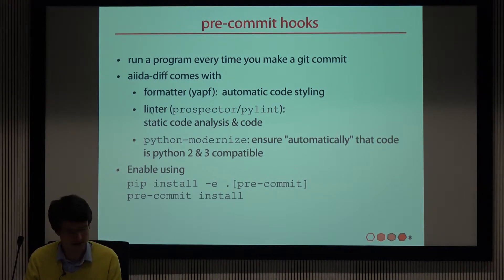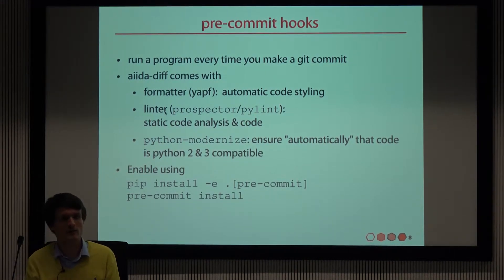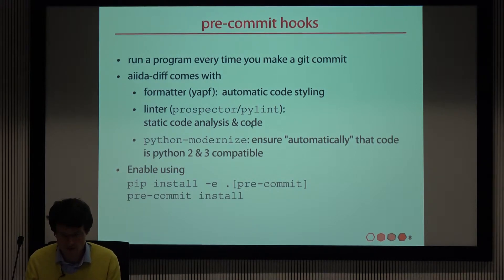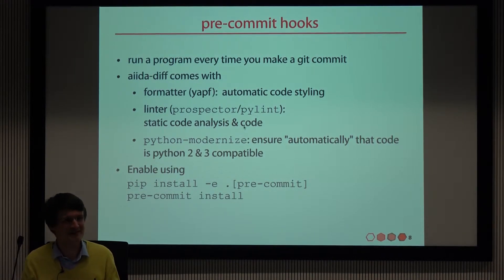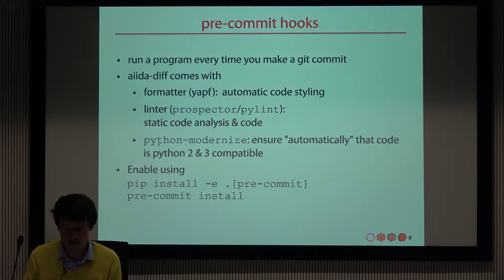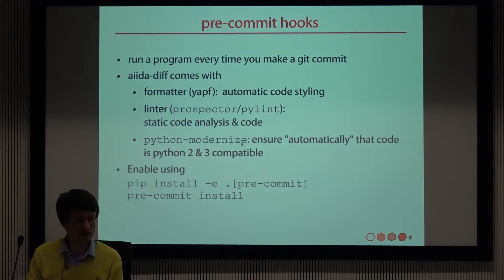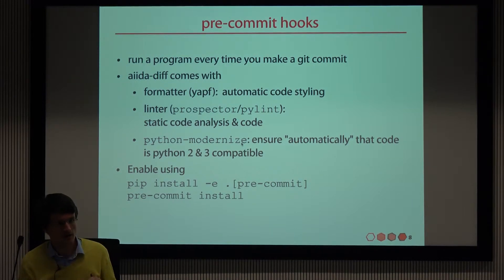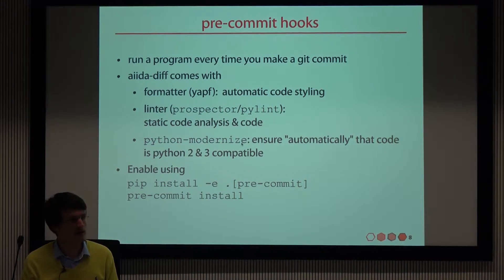Then there is a linter. This is very helpful — it can, when you try committing code, detect errors using static code analysis without ever having to run it. It also gives you suggestions on things you should be doing, even if it's not sure whether it's really an error. Finally, there's Python modernize, a very useful package that helps you write Python 2 and Python 3 compatible code. We use this in AIDA core, and it's part of the pre-commit hooks in the AIDA diff plugin.